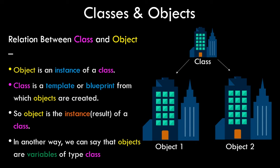Another way to look at classes and objects is to compare it with the procedural part. We can say that objects are variables of type class. In procedural programming we have inbuilt variables like int, float, string, and character. Consider the class as a custom data type that we create — it will have a bundle of variables and methods that operate on those variables. The object can be considered as the variable name.